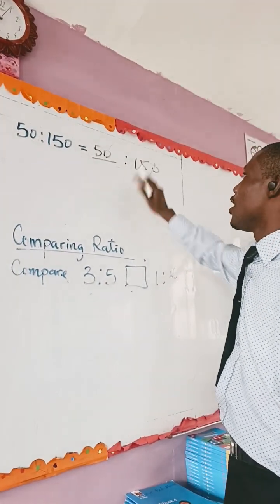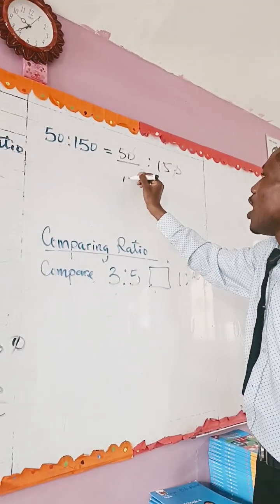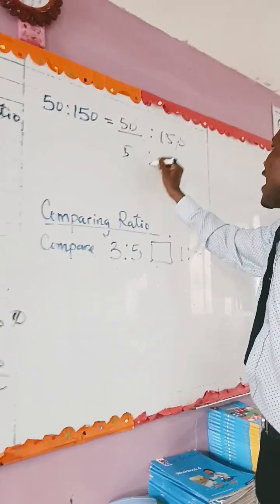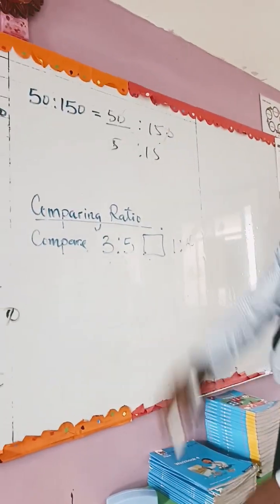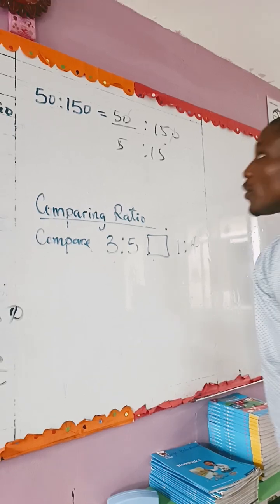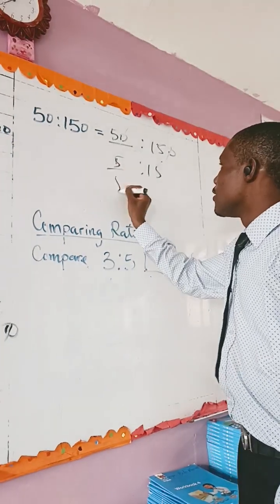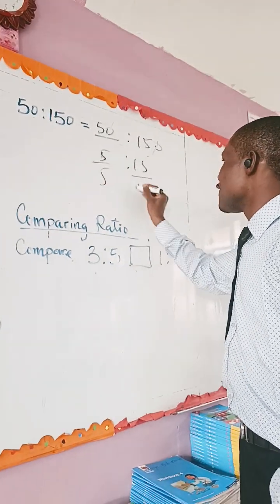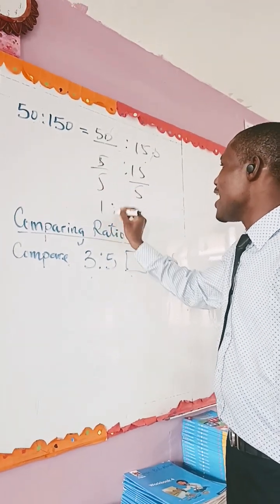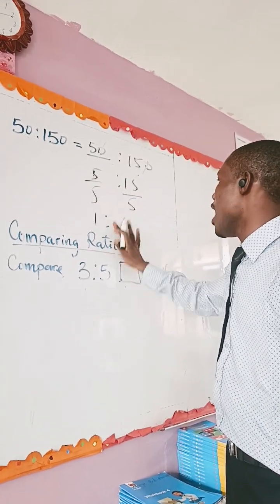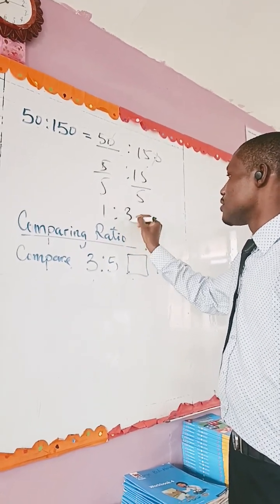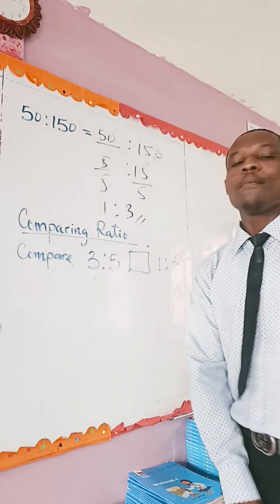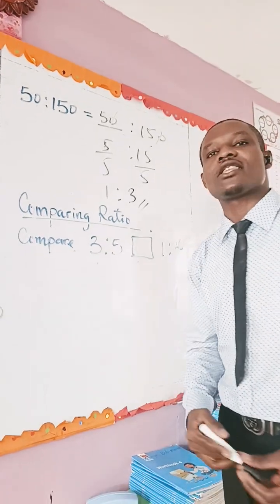So what do we do? Divide by five and five. One ratio — what? Simple as ABC.